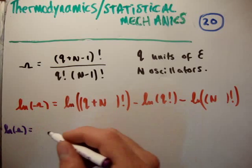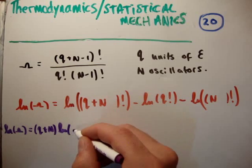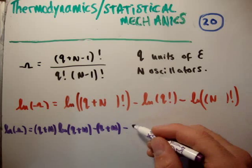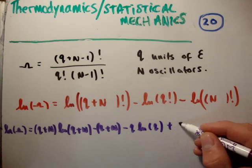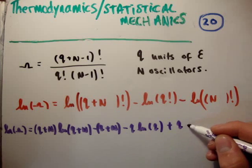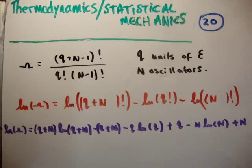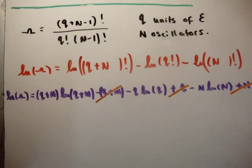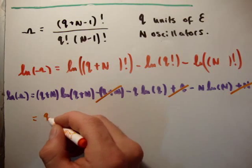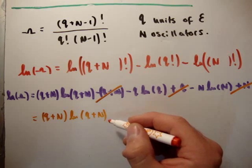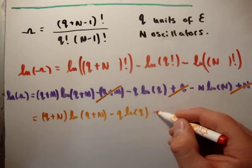Applying Stirling's approximation, the natural logarithm of the multiplicity becomes (q + n)·ln(q + n) - (q + n), minus q·ln(q) + q, minus n·ln(n) + n. We can see that the -(q+n), +q, and +n terms cancel each other out, leaving us with (q + n)·ln(q + n) - q·ln(q) - n·ln(n).